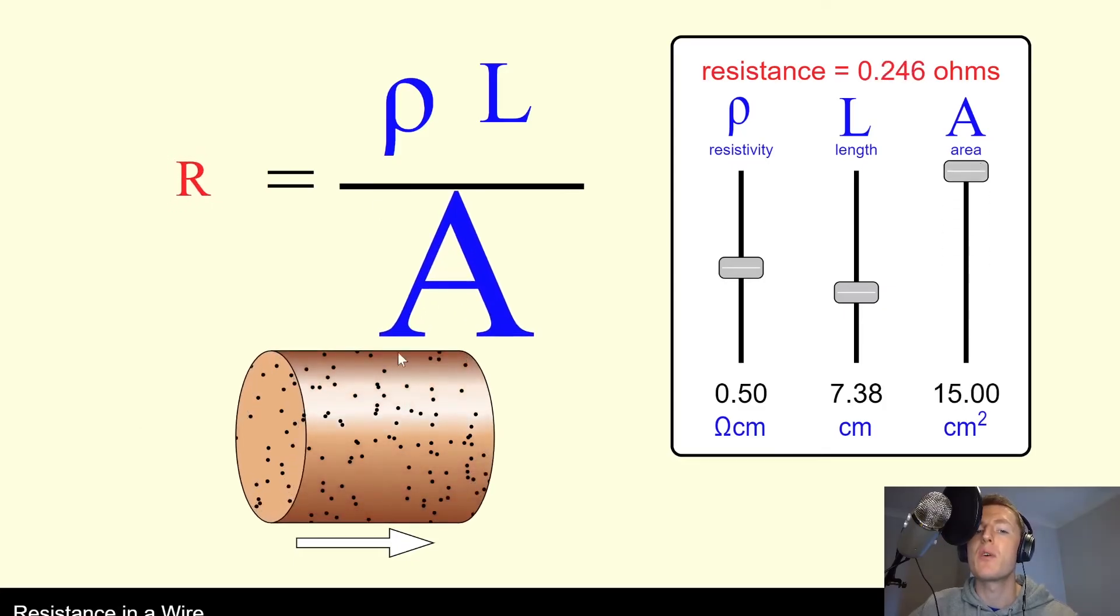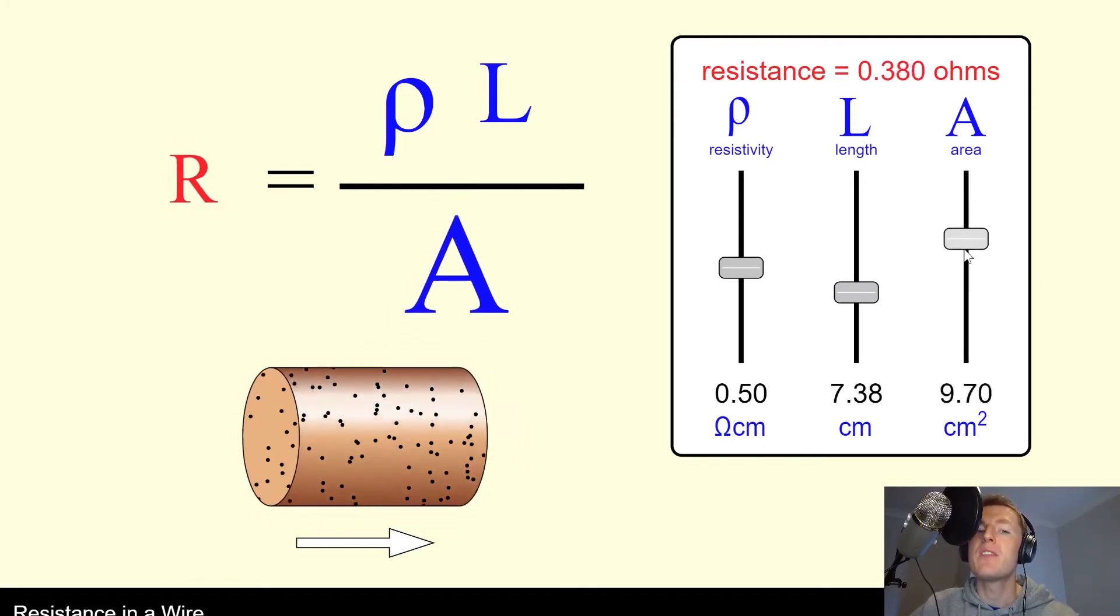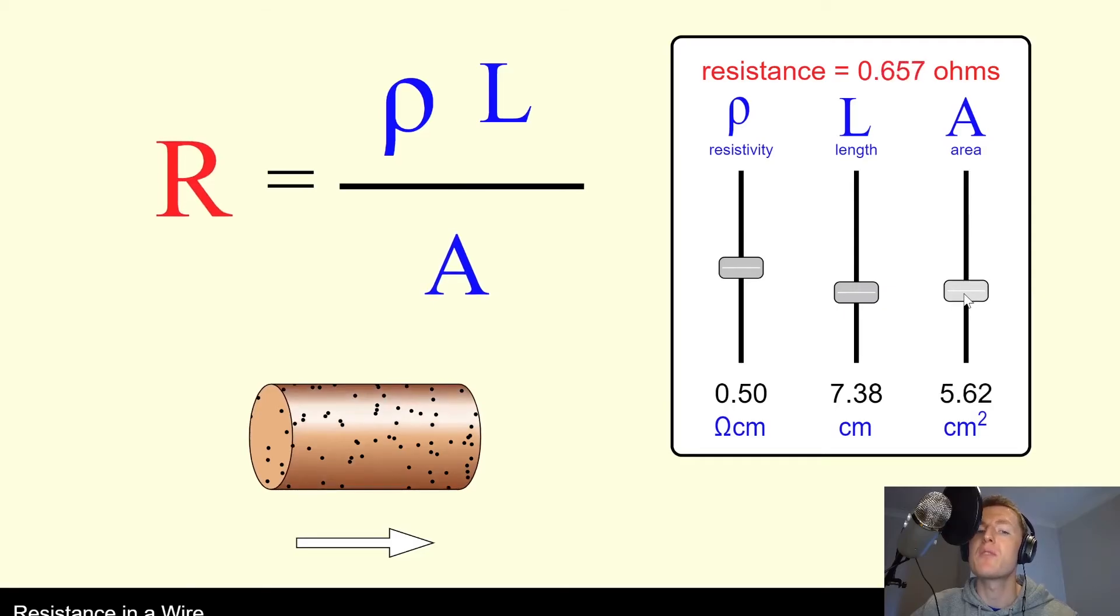If however we take our area and we increase our area, you'll notice there's now more space for the electrons to move around in, so this is going to decrease the resistance to the flow of current. If we decrease the area however, then that means there's smaller space for the electrons to move in, so the resistance will increase.